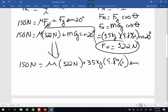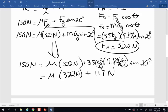So I'm going to have 9.8 times 35 times the sine of 20, I get 117 newtons. Kilograms times meters per second squared is a newton. So I've got mu times 322 newtons, plus 117 equals 150.